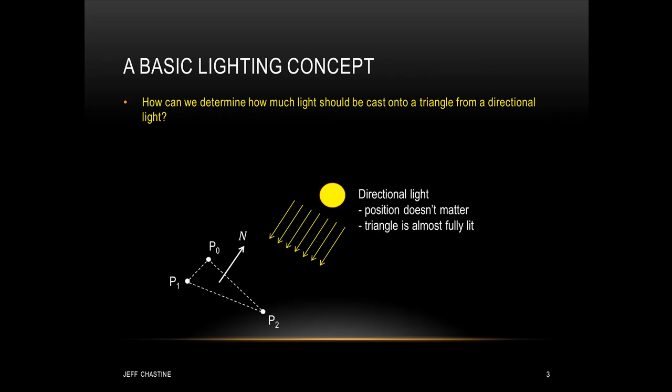So to get a better intuition about lighting, let's see an example. Now in a previous lecture, we had figured out how to calculate the normal of a triangle. In this example, we've included a light source, and light is coming uniformly from one direction. Now we'll call this a directional light, and we'll talk about it later, but realize that the position of this light doesn't matter.